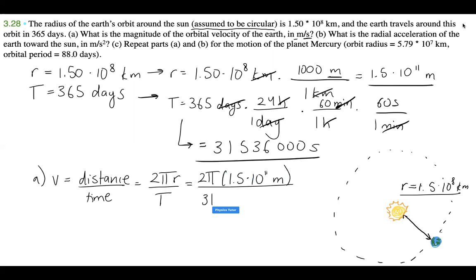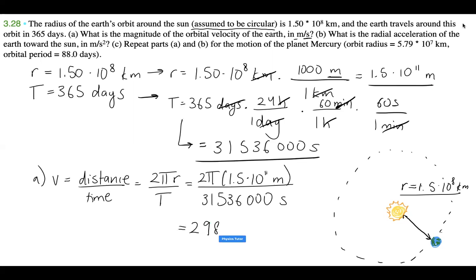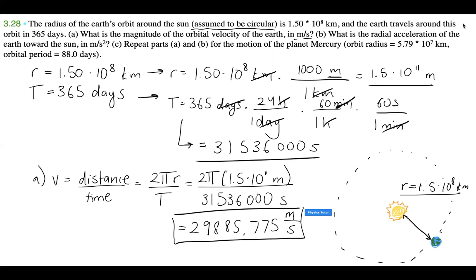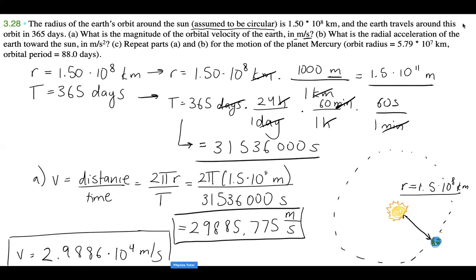So it's 2π times r over the period. And all together when I divide that out, what I'm getting is 29,885.775 meters per second. So the orbital velocity is 2.9886 times 10 to the 4 meters per second. That is part A.